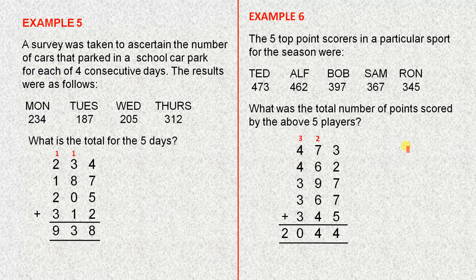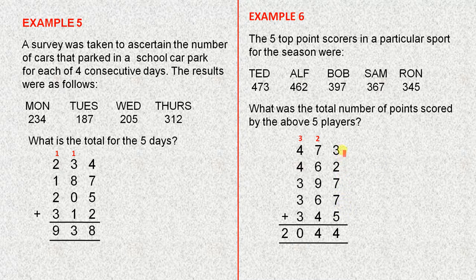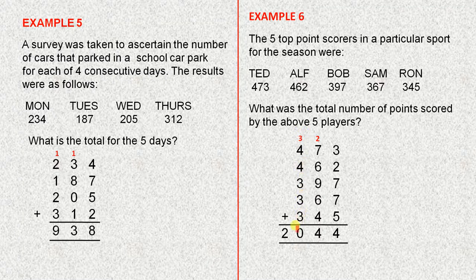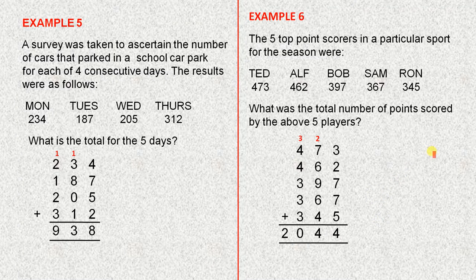The top five point scorers in a particular sport for the season were, so those five people scored those points respectively. And we need to find the total. So we put all the numbers down and count them up very carefully. So when you count those digits there up, you get twenty-four. So there's four units and two tens. When you add all those digits together, you get thirty-four. So that's four tens and three hundreds there. And when you add all those digits together there, you get twenty. So the total number of points for the five people were two thousand and forty-four.